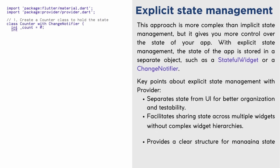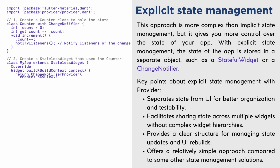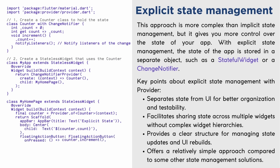Explicit state management is more complex than implicit state management, but it gives you more control over the state of your app. With explicit state management, the state of the app is stored in a separate object, such as a stateful widget or a change notifier. Key points: it separates state from UI for better organization and testability, facilitates sharing state across multiple widgets without complex widget hierarchies, provides a clear structure for managing state updates and UI rebuilds, and offers a relatively simple approach compared to some other state management solutions.